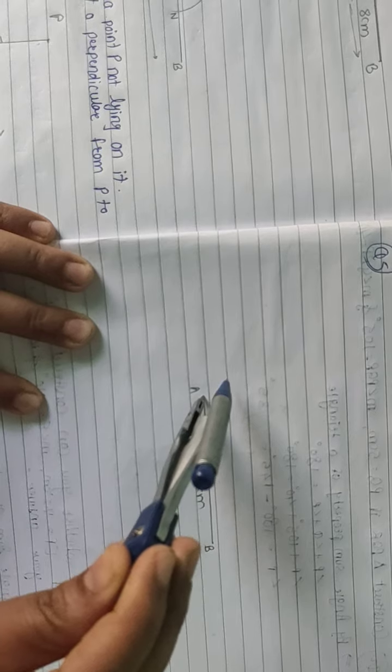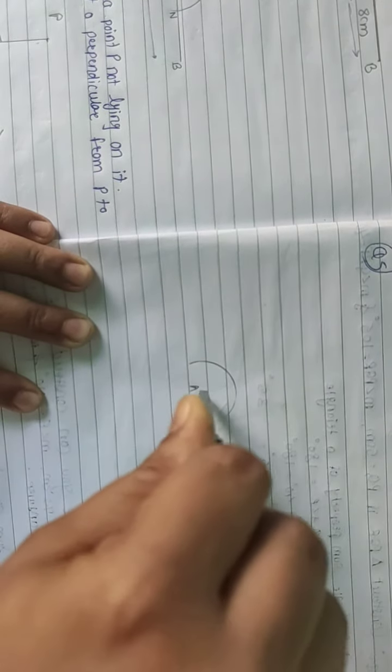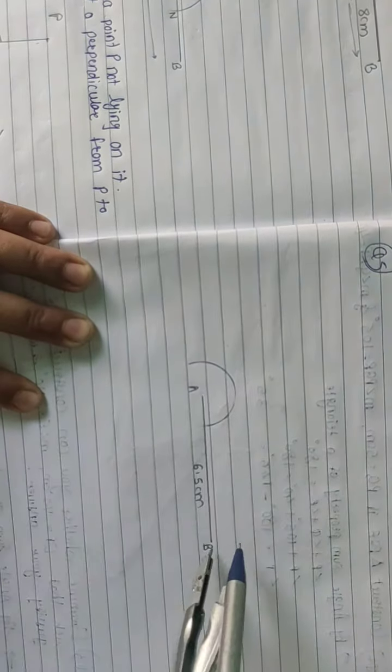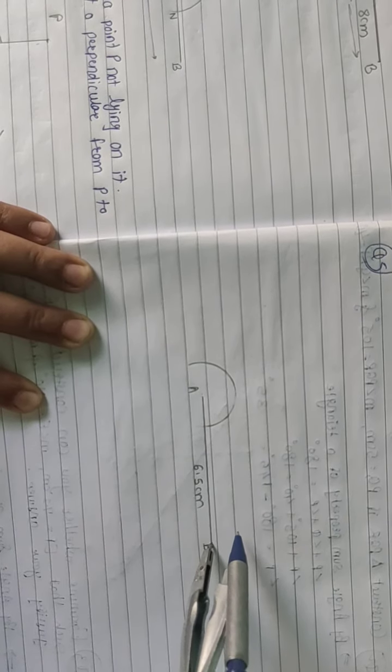So take a convenient radius in your compass and draw a half circle from both sides, from A and from B.